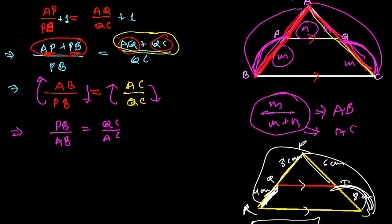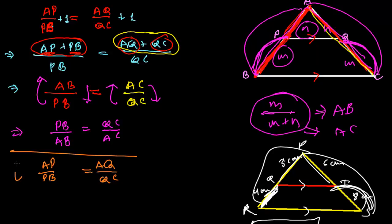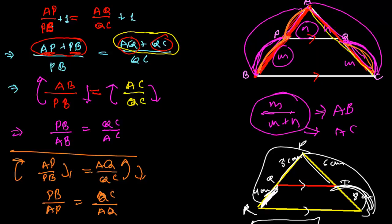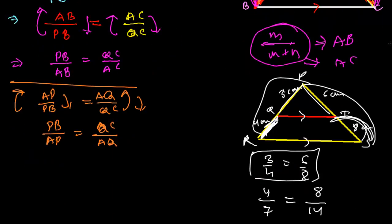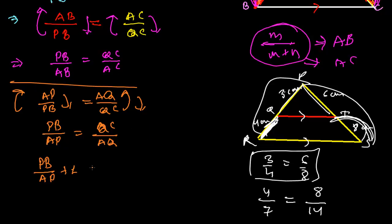From the same figure, we had AP/PB = AQ/QC. Now I'll take the reciprocal of both sides: PB/AP = QC/AQ. Let's do one more step — add 1 to both sides again: PB/AP + 1 = QC/AQ + 1.